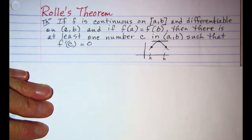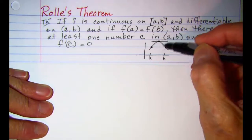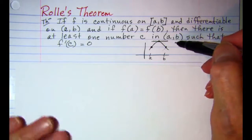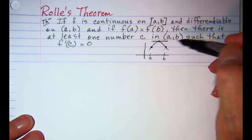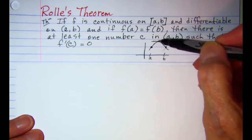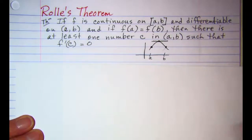It may be more than one place so our function may do a couple of bumps. But Rolle's theorem guarantees that there's at least one place where we will hit a max or a min and the derivative will be 0.